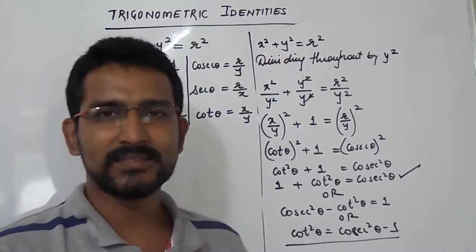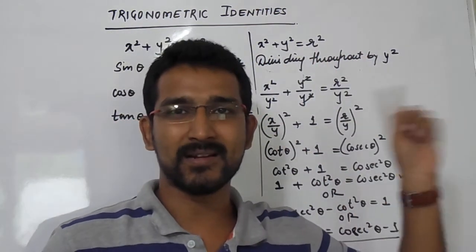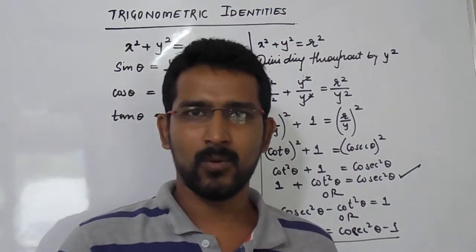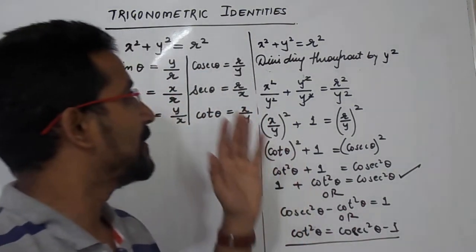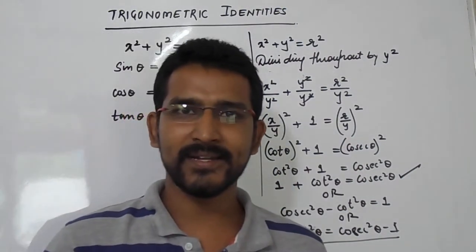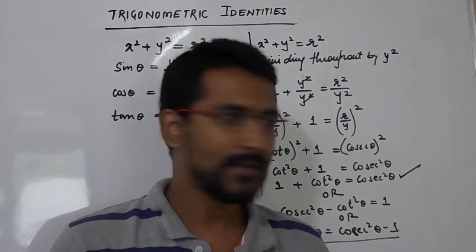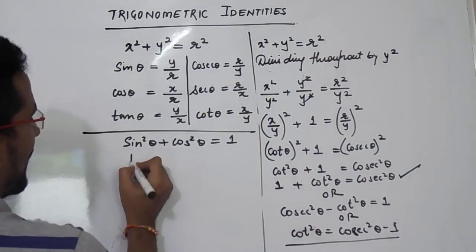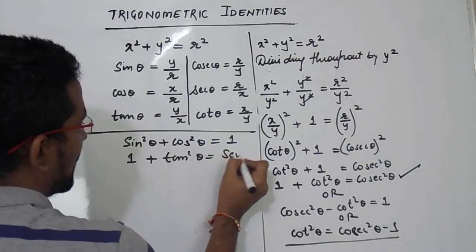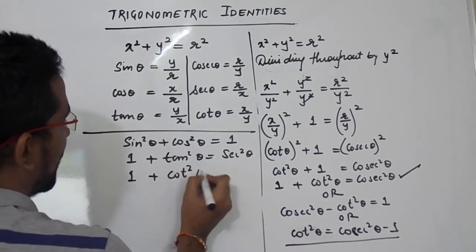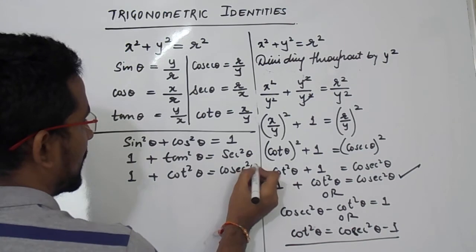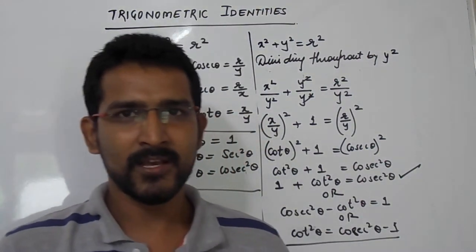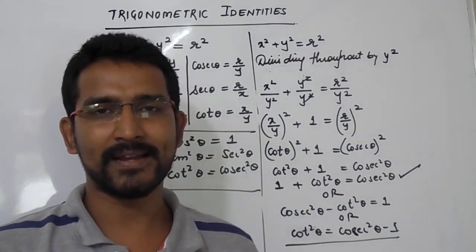So this is how we can get all three identities. When we divided x² + y² = r² by r², we got sin²θ + cos²θ = 1. When we divided by x², we got 1 + tan²θ = sec²θ. And when we divided by y², we got 1 + cot²θ = cosec²θ. These three identities are very important. In the next session, we are going to see problems based on these identities. Till then, all the best.